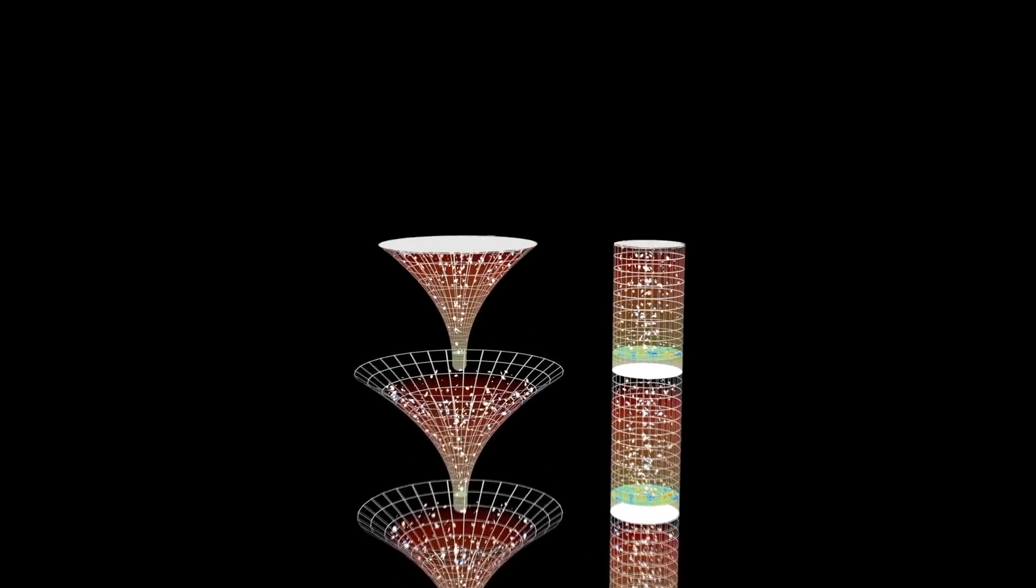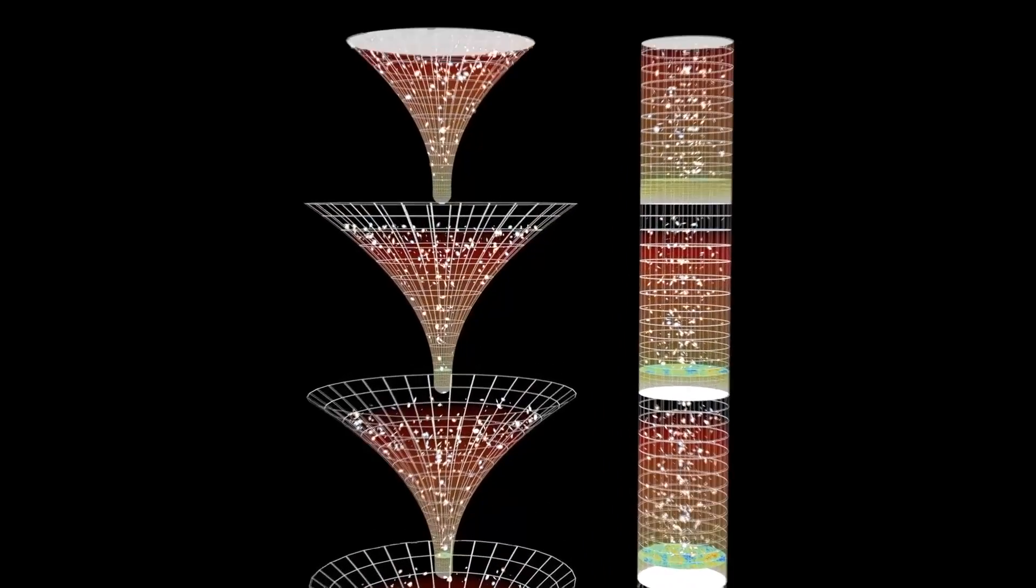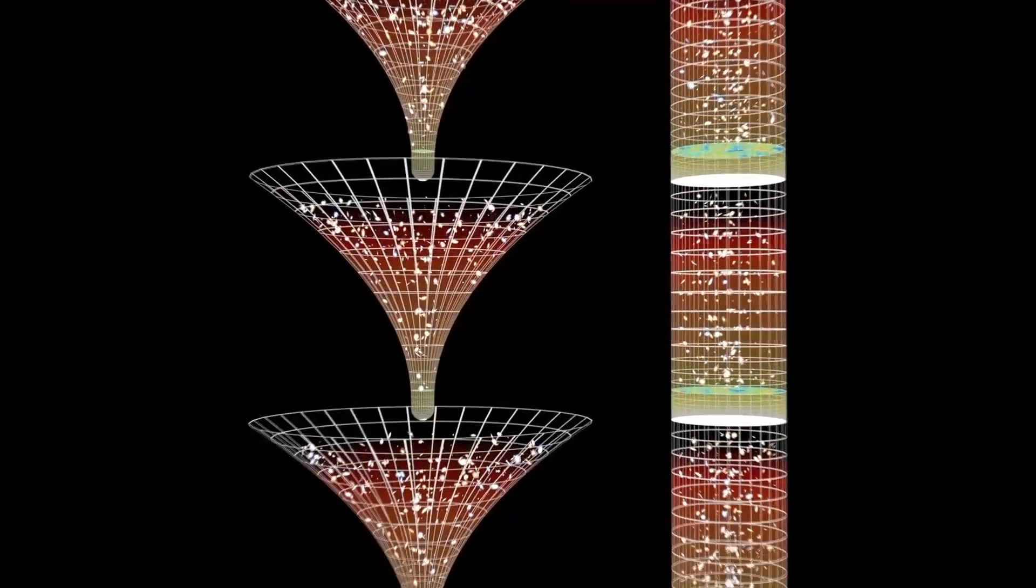As they continued to analyze the data, they found that these points contained traces of electromagnetic radiation that seemed to have survived the recycling process between universes. This finding was a significant step forward in validating the CCC theory.